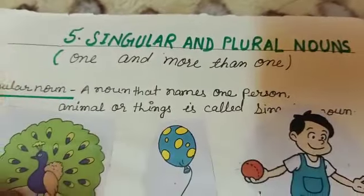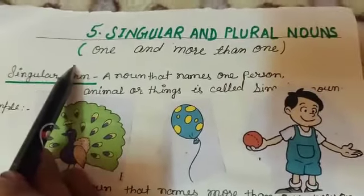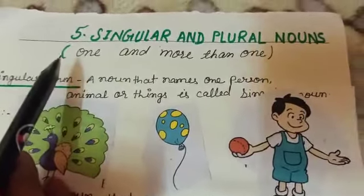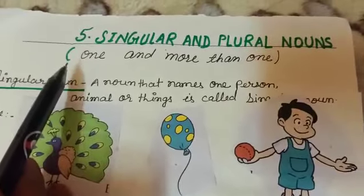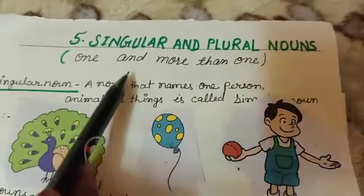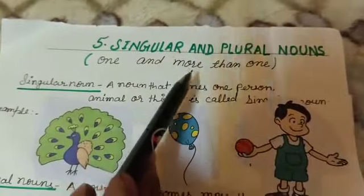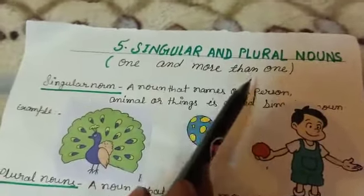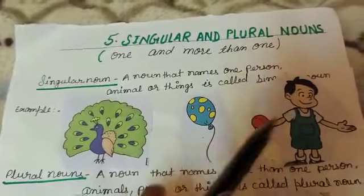As you know, the definition of a noun is: the name of a person, place, animal, or thing is called a noun.